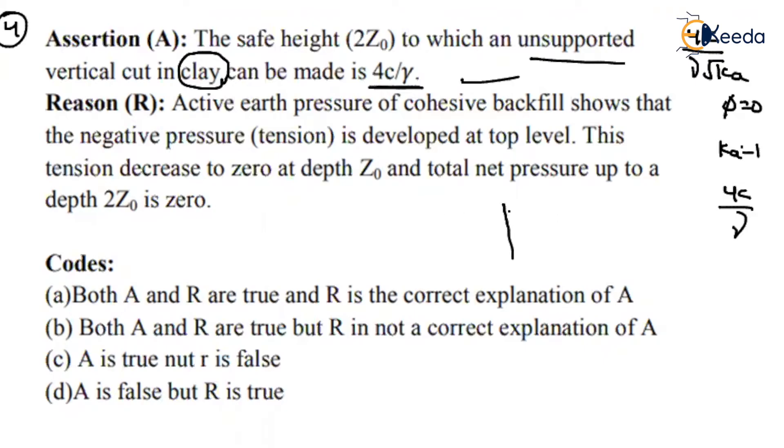If you are talking about cohesive soil, the top layers will have some negative pressure. This pressure will be zero at a depth of Z₀. And what are they saying? The net pressure up to a depth of 2Z₀ is zero. Is this right or wrong? Based on this, we are getting this relationship. The reason is also correct, and this reason is the correct explanation for A.